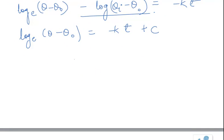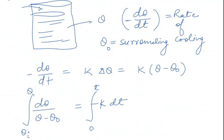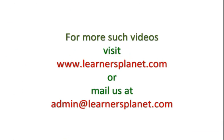So if you plot this graph of log to the base e of theta minus theta naught with time t, we will have this kind of graph. Let us look at the four options that are given. Option A is the correct one.